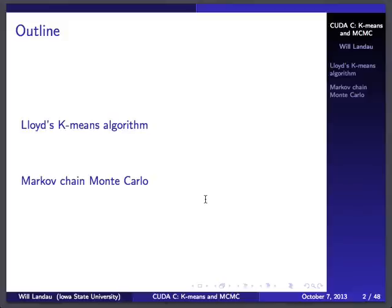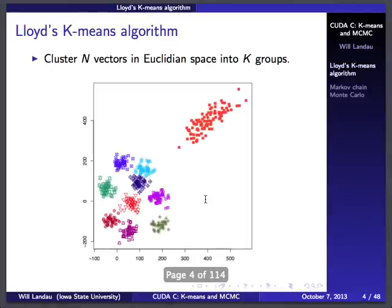Last time we talked about beginning programming in CUDA-C, and I'm going to dive right into some practical examples that use CUDA-C. I'm going to review the algorithms behind these two things and how to implement them. Let's start with Lloyd's k-means. This is the most basic, most intuitive version of k-means — a problem whereby you cluster N vectors in Euclidean space into some number K of groups.